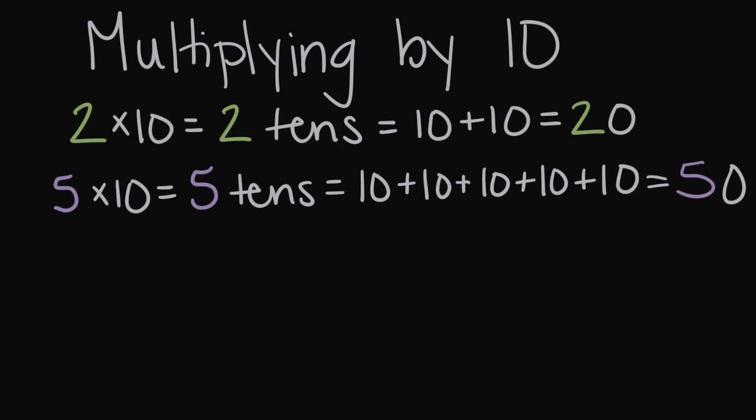Let's go to one more, maybe one that we don't know the answer to off the top of our head. Let's try something like 13 times 10. Maybe we don't know the answer to 13 times 10, but we do know that 13 times 10 is 13 tens.